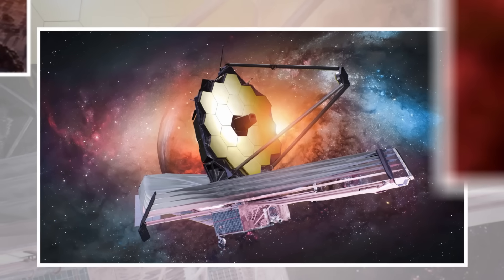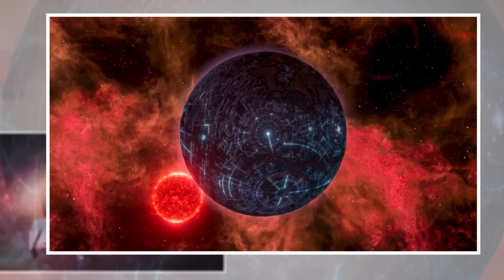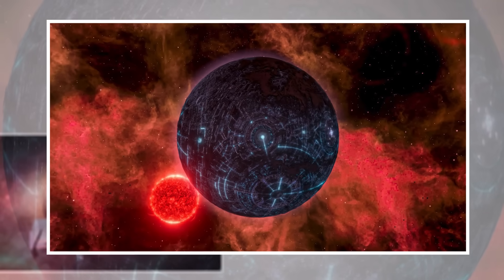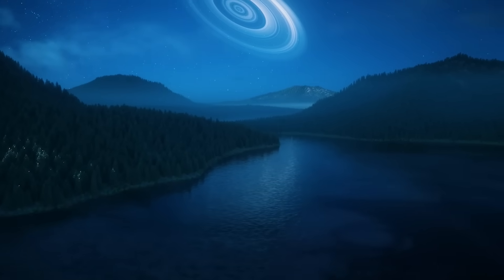Third, some data from JWST hinted at a very thin atmosphere. It's not confirmed, but the way heat moves across the surface doesn't match a world with no air at all. A light atmosphere could help hold some warmth and protect the surface from sudden temperature swings.